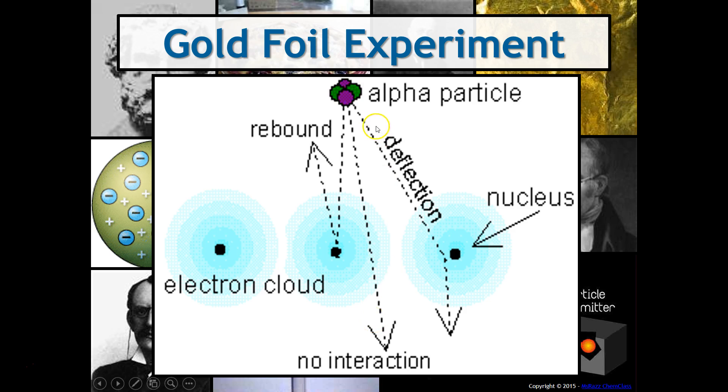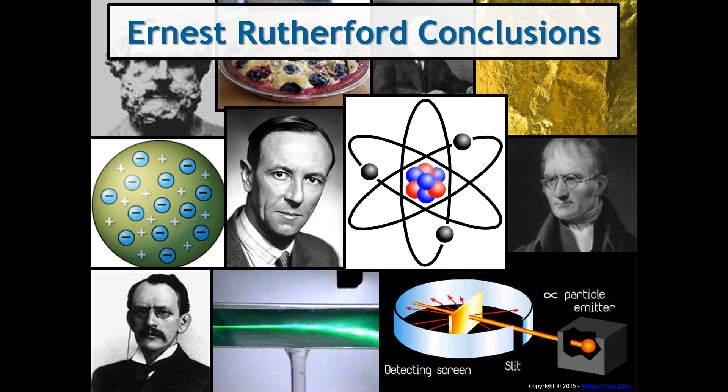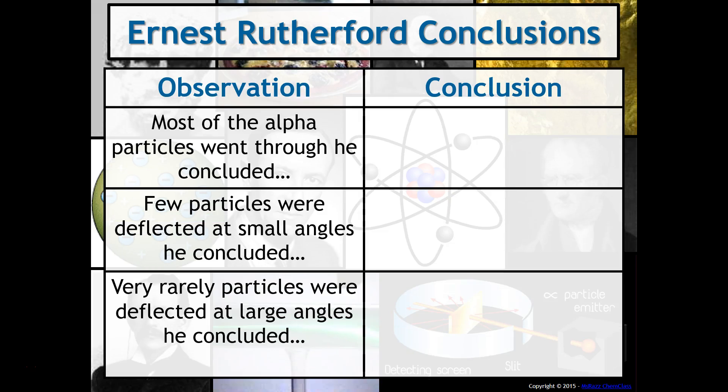However, some were deflected and then some would rebound in the exact direction it came from. And so what did this mean for our atom? Well, it had some pretty significant meanings for us.